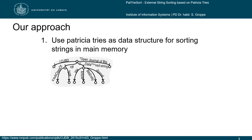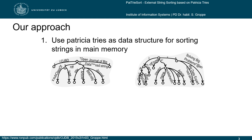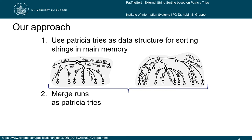Our approach therefore uses partition trees for the internal representation of the strings during the run generation phase. Partition trees store a set of strings in a very compact way by storing common prefixes only once. Furthermore, we also store the runs in the form of partition trees, which reduces IO costs. We developed a special merge algorithm taking partition trees as input, which has the advantage that common prefixes are also compared only once, lowering the costs for string comparisons dramatically.